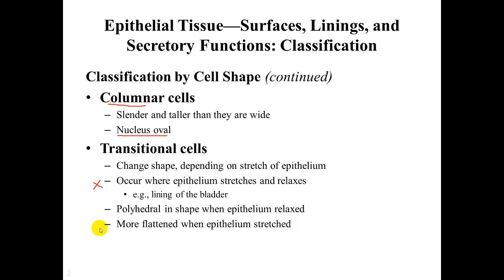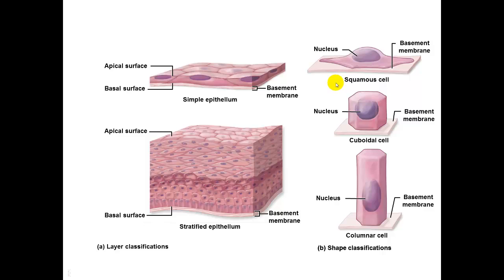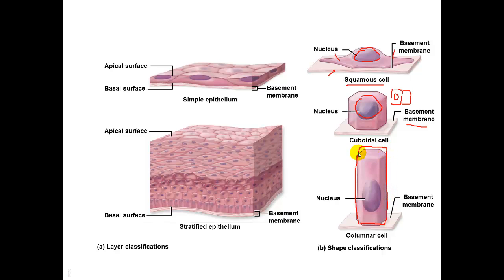Here is a picture illustrating what was just described. We can see squamous cells with the pinched-off ends, the basement membrane, and the slightly flattened nucleus. Here is a cuboidal cell with the basement membrane and the round nucleus — when viewed under a microscope, they will more often appear as a square, with the nucleus inside. Columnar cells are taller than they are wide and will appear more as an elongated rectangle under the scope, with the characteristic oval-shaped nucleus.